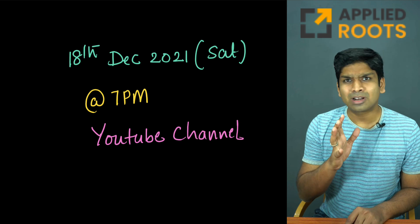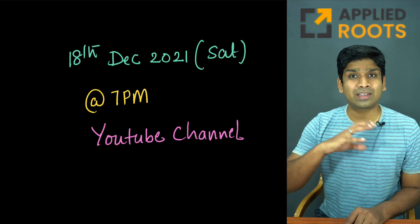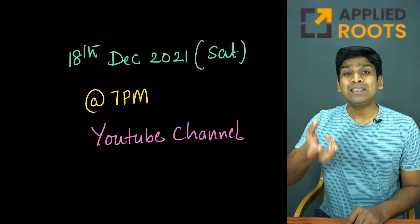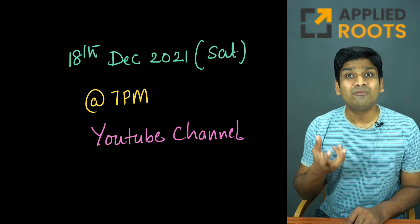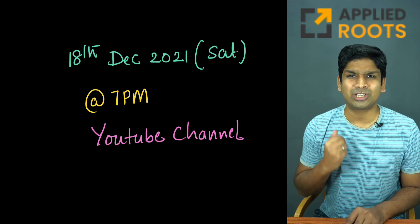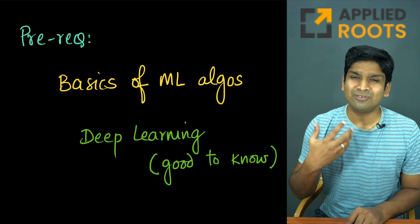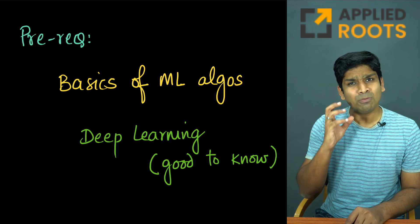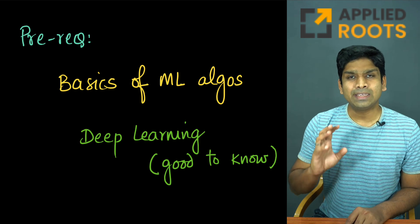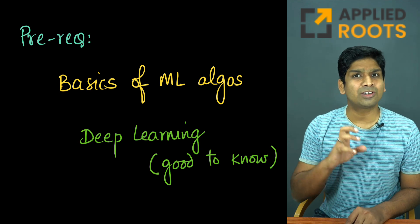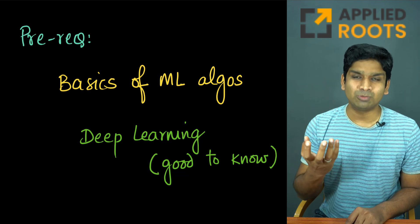This live session will be roughly a 90-minute session where we will discuss the architecture, various architectural choices we have, why these architectural choices are sensible, and where we should use what. The prerequisites for this live session — basically how you can make the most out of it — is if you know basic machine learning algorithms. You can understand a good chunk of it even if you know basic logistic regression and linear regression; you'll be able to get a sense of how distributed machine learning works.